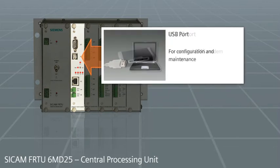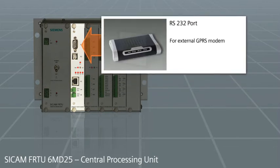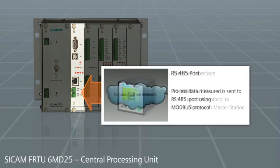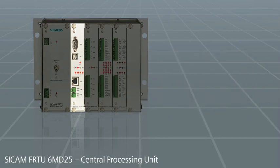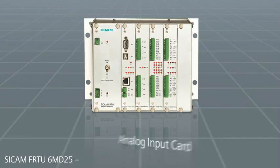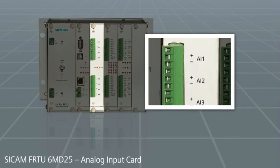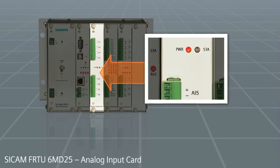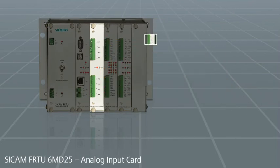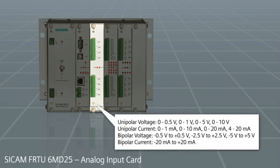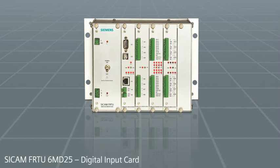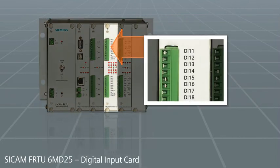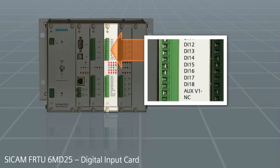The analog input card has eight user-configurable analog inputs. These are unipolar or bipolar voltage and current. The digital input card has 16 digital inputs that can be configured as single point and double point.